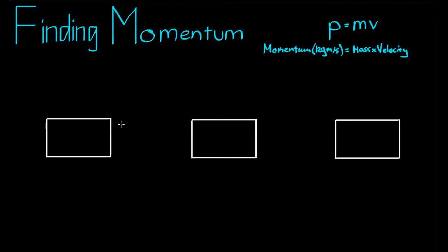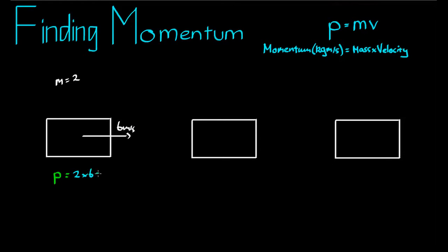I have three boxes pictured below. We're going to find the momentum for each of them. We'll find the momentum for the first two, and for the third one we're going to find the velocity. So for this first box, the mass is two kilograms. It's moving at a speed of six metres per second to the right. Momentum is given by the symbol p. If momentum is mass times velocity, then p equals two times six, which is twelve. The units are kilograms times metres per second.